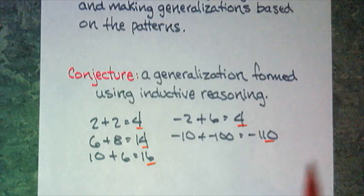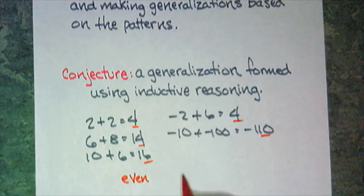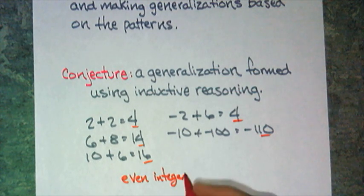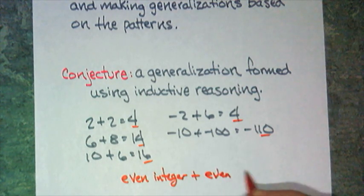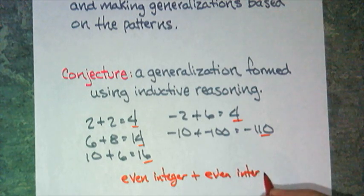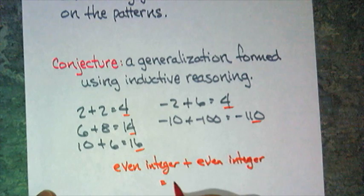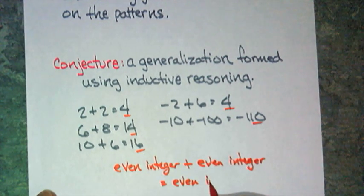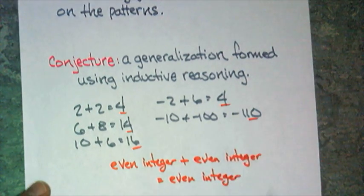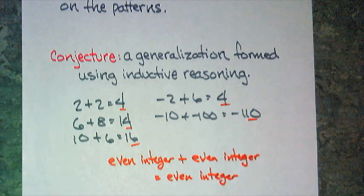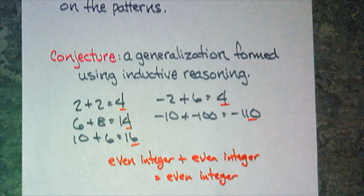So, you might make a conjecture that an even integer, summed with another even integer, will equal yet another even integer. And that's a conjecture. I did not show that, I don't know, I didn't test every integer. I'm making a conjecture based on the limited patterns that I have.